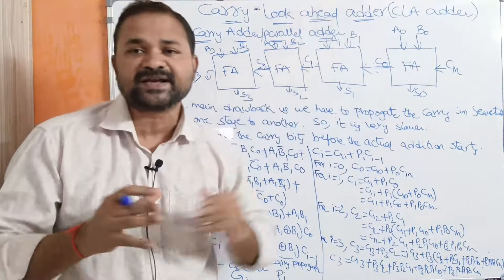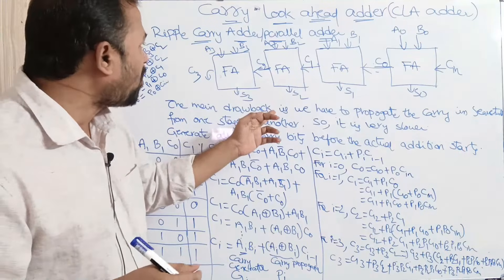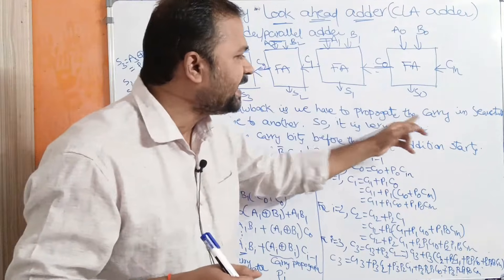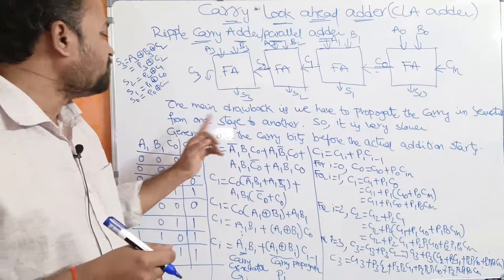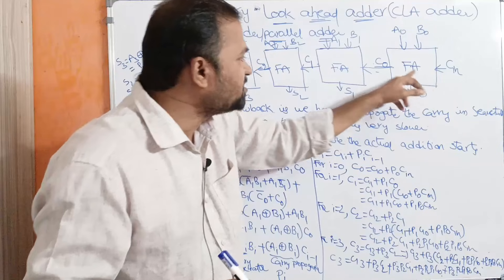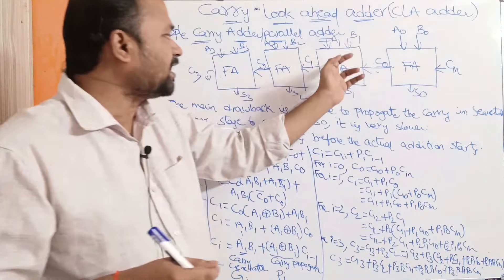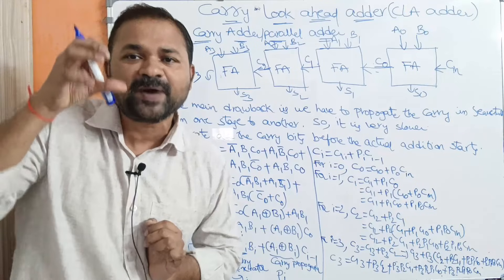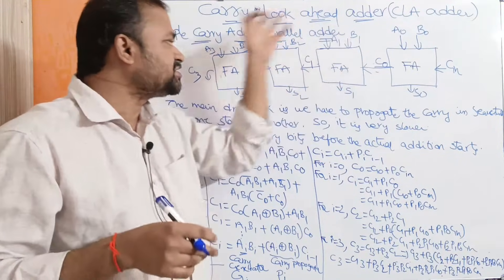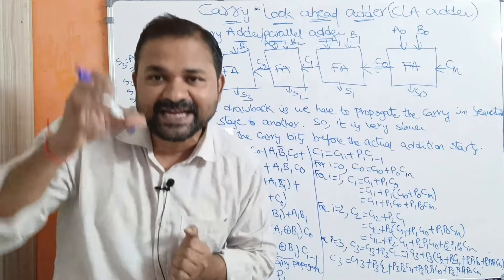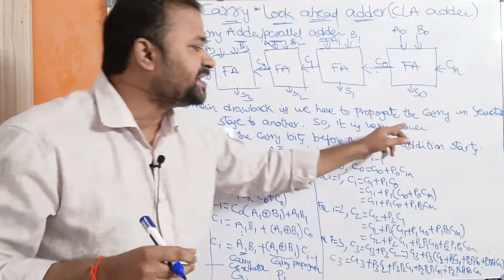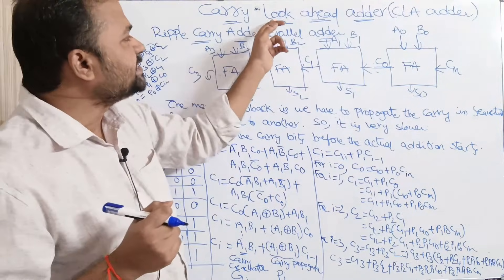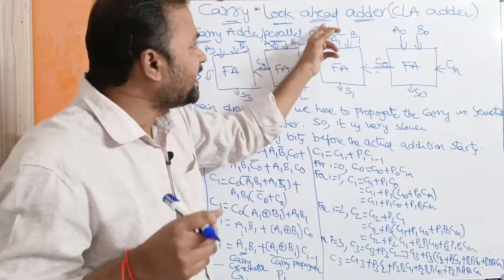That is the problem with the ripple carry adder or parallel adder. The main drawback is that we have to propagate the carry sequentially from one stage to another stage. We have to propagate C1 to its previous full adder in sequential manner. There is a delay in propagating that carry, so it is a very slow process.